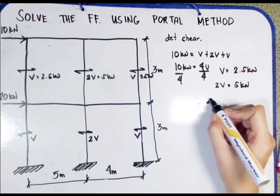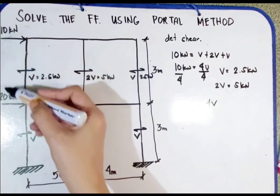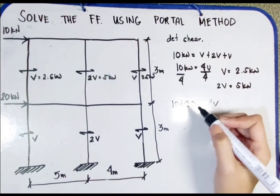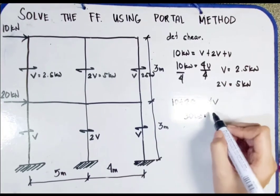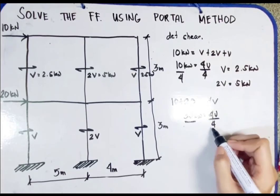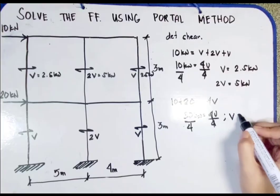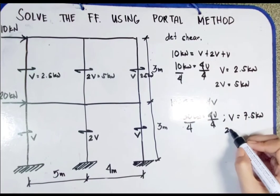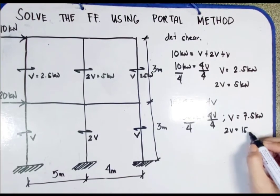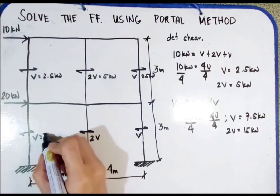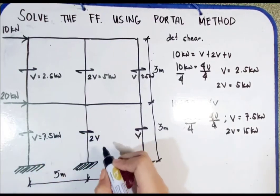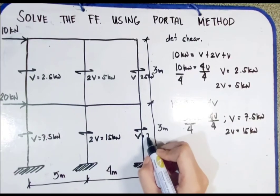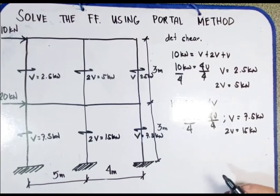For the second level, we have 4V total shear. The combined load is 10 plus 20 equals 30 kilonewtons. So 30 kilonewtons equals 4V, giving V equals 7.5 kilonewtons. Therefore the interior shear is twice that, which is 15 kilonewtons. We place 7.5 kN, 15 kN, and 7.5 kN for this level.